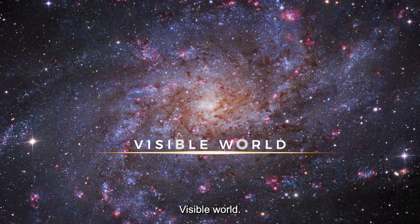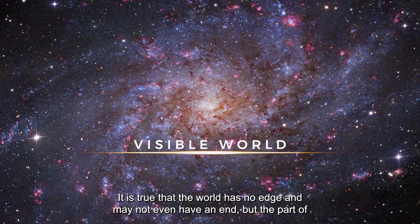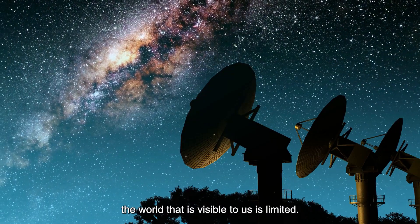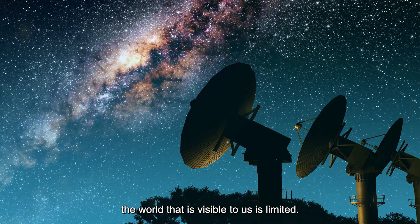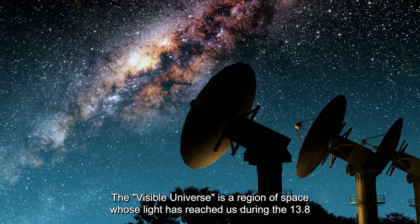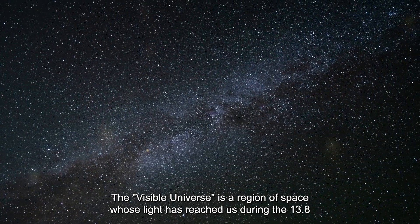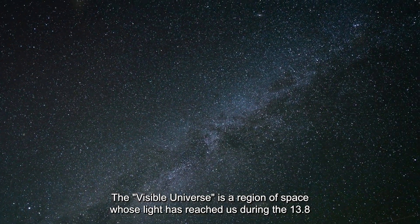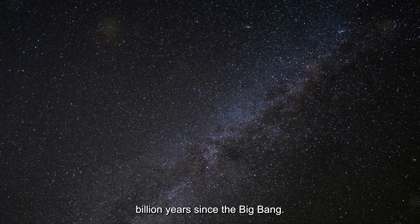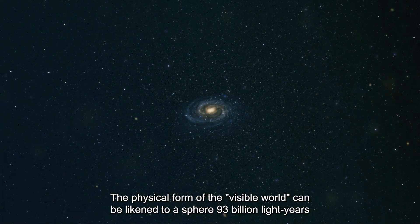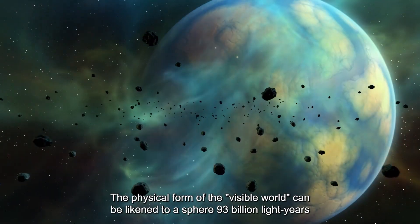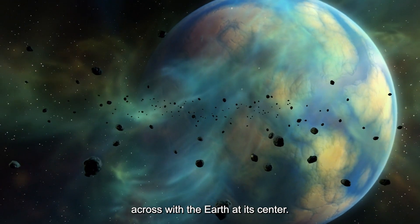Visible world. It is true that the world has no edge and may not even have an end, but the part of the world that is visible to us is limited. The visible universe is a region of space whose light has reached us during the 13.8 billion years since the Big Bang. The physical form of the visible world can be likened to a sphere 93 billion light years across with the Earth at its center.